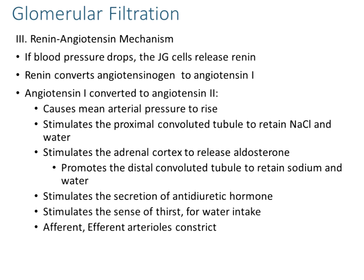Renin travels in the bloodstream to the liver and helps produce angiotensinogen, which is converted to angiotensin I. When angiotensin I is exposed to angiotensin-converting enzyme (ACE), it becomes angiotensin II. Angiotensin II acts in many places: in the brain it triggers ADH release and thirst; in the adrenal glands it triggers aldosterone release; in blood vessels it triggers arterial constriction, increasing afterload. The combined effects increase fluid volume, blood vessel tone, thirst, and blood pressure.